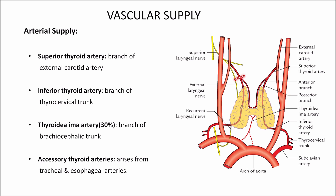This blood supply is very important clinically in thyroidectomy. The external laryngeal nerve, which supplies the cricothyroid muscle, is in very close contact with the superior thyroid artery. When approaching the gland, the external laryngeal nerve deviates away from the artery — so we must ligate the superior thyroid artery very close to the gland to avoid damaging this nerve. Similarly, when ligating the inferior thyroid artery, it is very near to the recurrent laryngeal nerve — so we ligate this artery far away from the gland to safely preserve the recurrent laryngeal nerve.